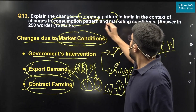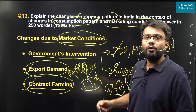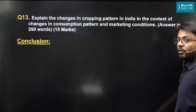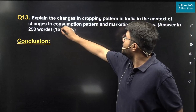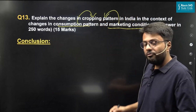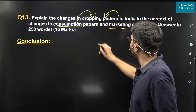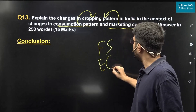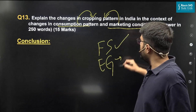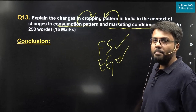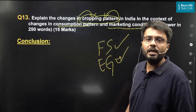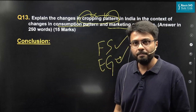We can see that both consumption pattern and marketing conditions play a crucial role in determining the cropping pattern in India. To conclude, both consumption pattern and marketing conditions influence this cropping pattern. However, the government should also take care of the need for food security as well as the economic growth of farmers. Therefore, both food security and economic growth of agriculture are important to further influence this cropping pattern so that the cropping systems in the country become more remunerative for Indian farmers.